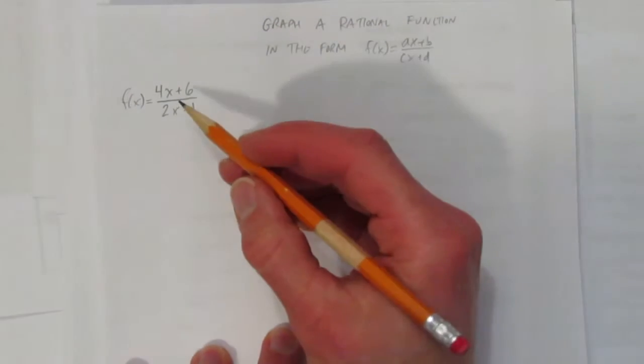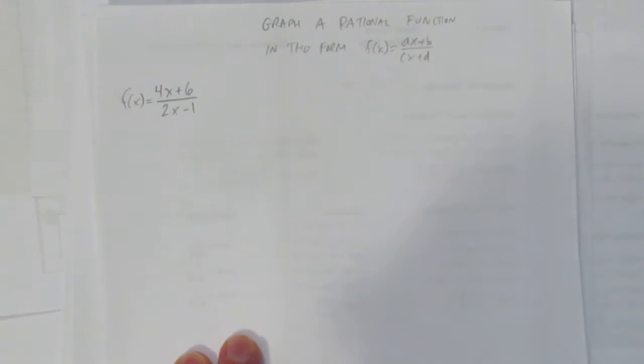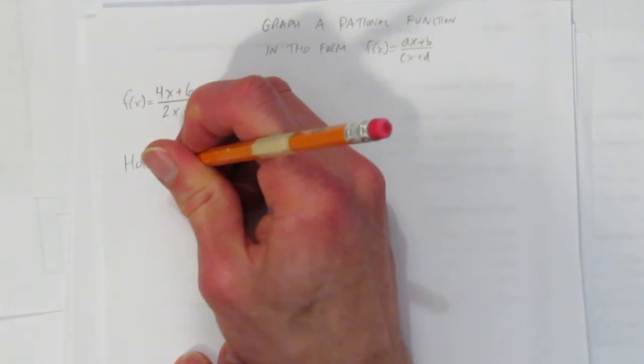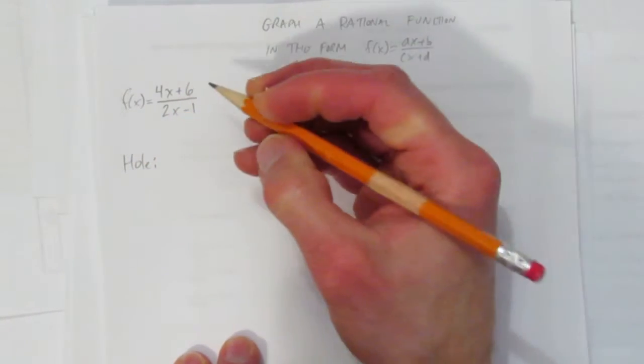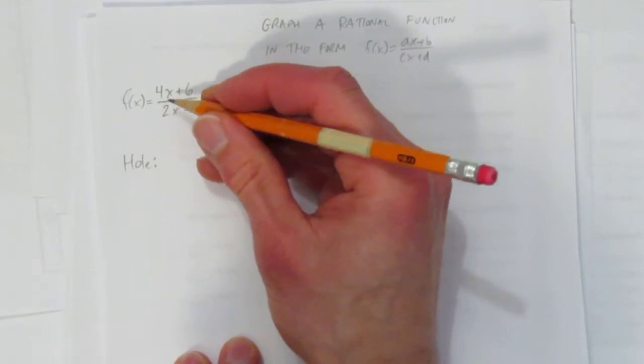The equation I gave as an example is (4x+6)/(2x-1). So there's four things we want to look for. The first would be holes. I always check for holes first. That would occur if something on the top factored. Oh, there is something. I could pull a 2 out of the top here.